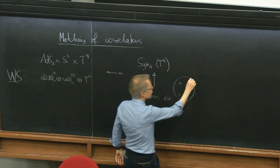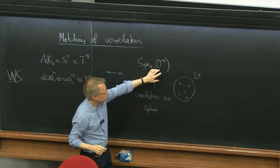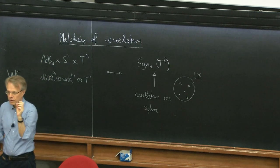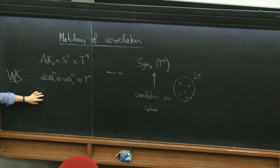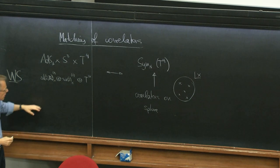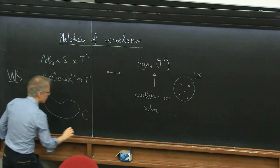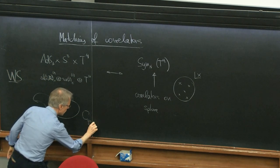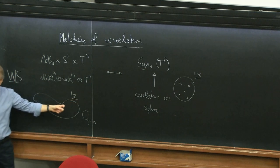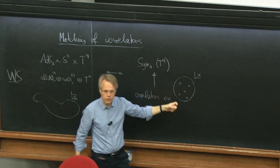Throughout today, the coordinates in the symmetric orbifold space will be denoted by X — X is always a coordinate of the correlation functions of the symmetric orbifold of T4. This is to be distinguished from the parameter on the worldsheet. The worldsheet will not always be a sphere; for most of today I'll concentrate on genus zero. The worldsheet coordinates are denoted by Z. Whenever you see a Z, it's a worldsheet coordinate; whenever you see an X, it's a coordinate in the symmetric orbifold theory.